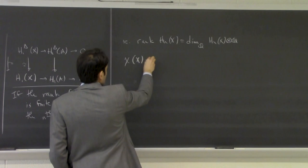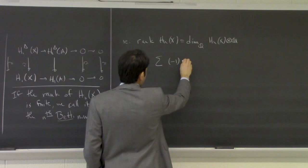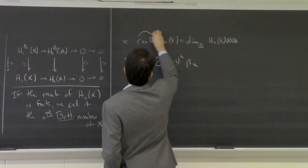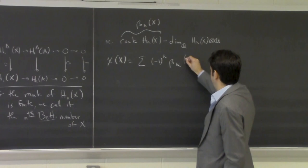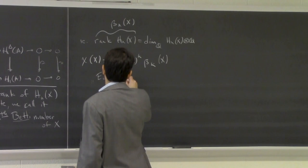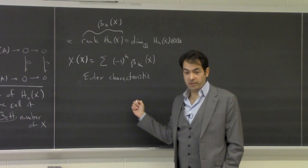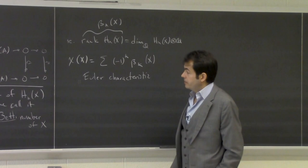We mentioned the Euler characteristic on the first day, so let's define it: it's the alternating sum of the Betti numbers, χ(X) = Σ (-1)^n β_n(X). From what we've shown, it is a homotopy invariant because the singular homology groups are homotopy invariants.